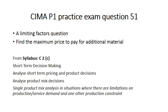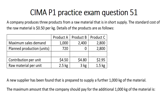When we see the question we'll see that there are three products, and we will see that there is a limit on how much we can sell of each of those three products, and also there is a limit on the raw material that could be used to make them. When I start the question my aim will be to get through it as quickly as I can so that I can achieve the 90-second target. The company produces three products from a raw material that is in short supply; the standard cost of the raw material is 50 cents per kilogram.